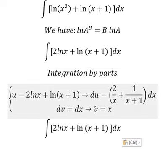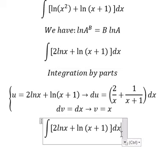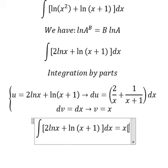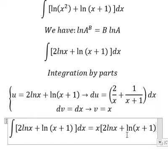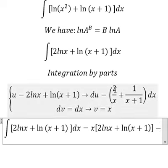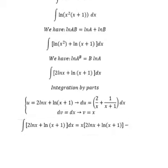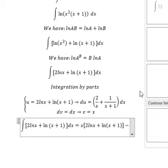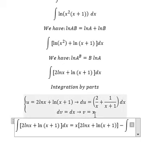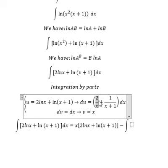So we have u multiplied by v, and that should be like this, minus the integration of u multiplied by v. That is x multiplied by this one, so we have 2 and the second one is x over x plus 1.